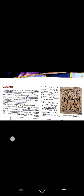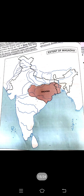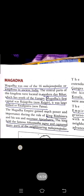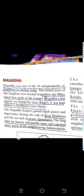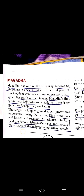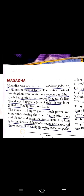Magadha was one of the 16 Mahajanpadas or kingdoms in ancient India. The central part of this kingdom was located in modern Bihar, which lies south of the Ganga river.